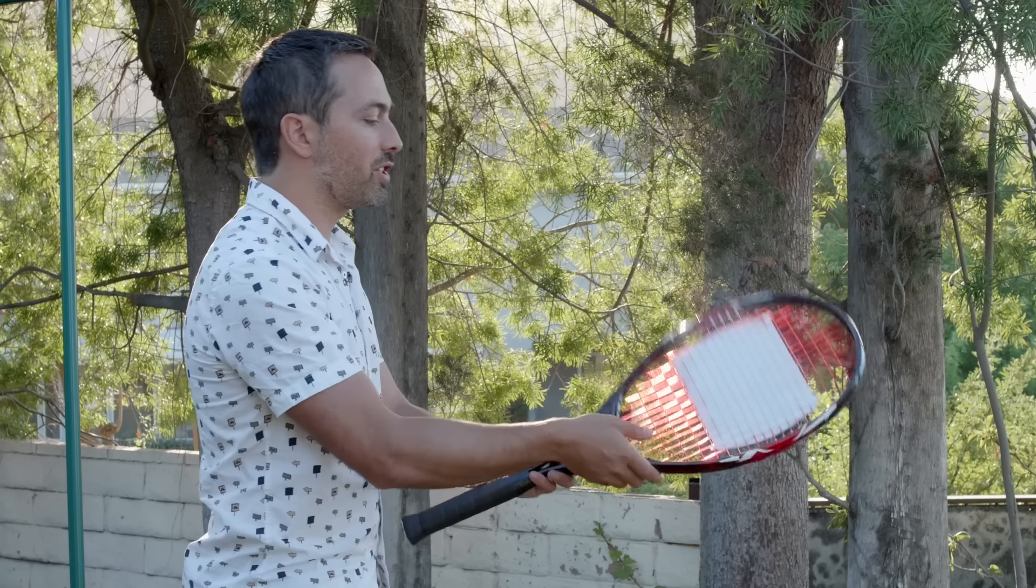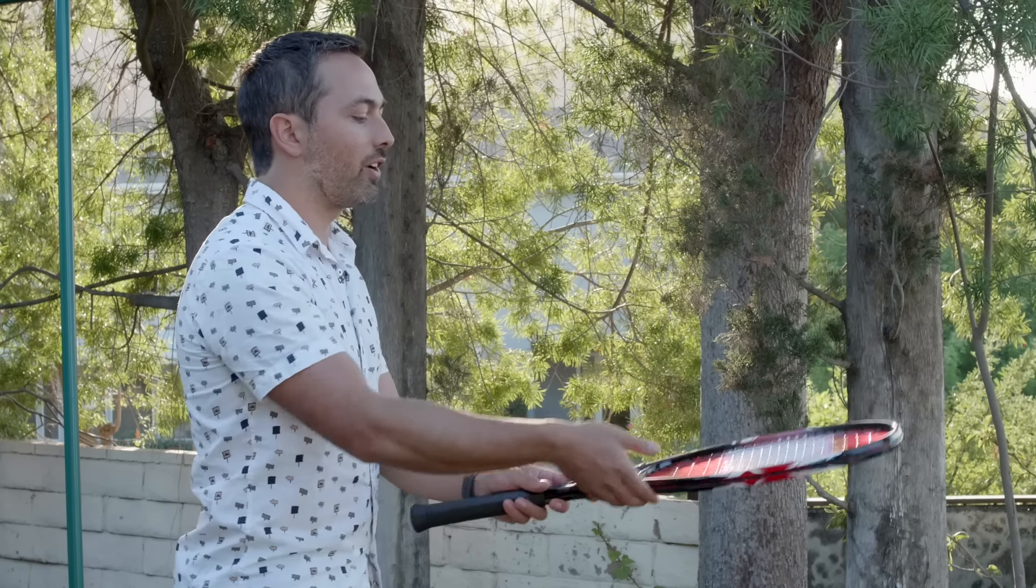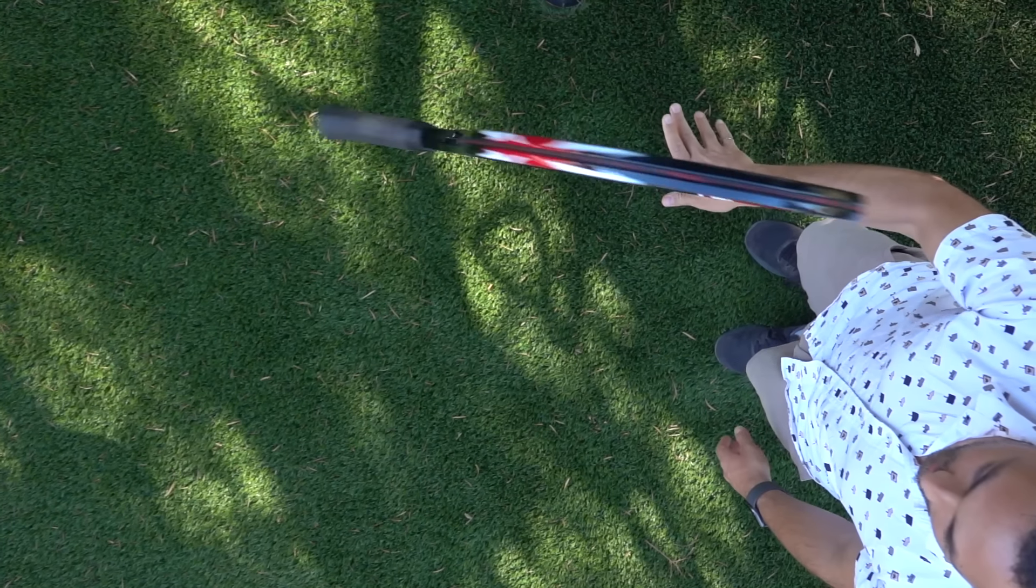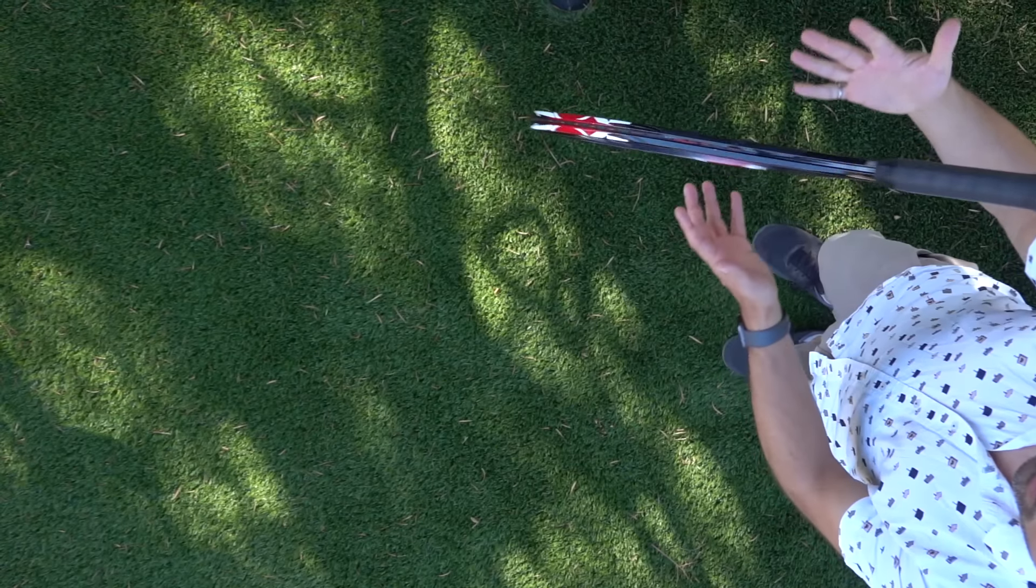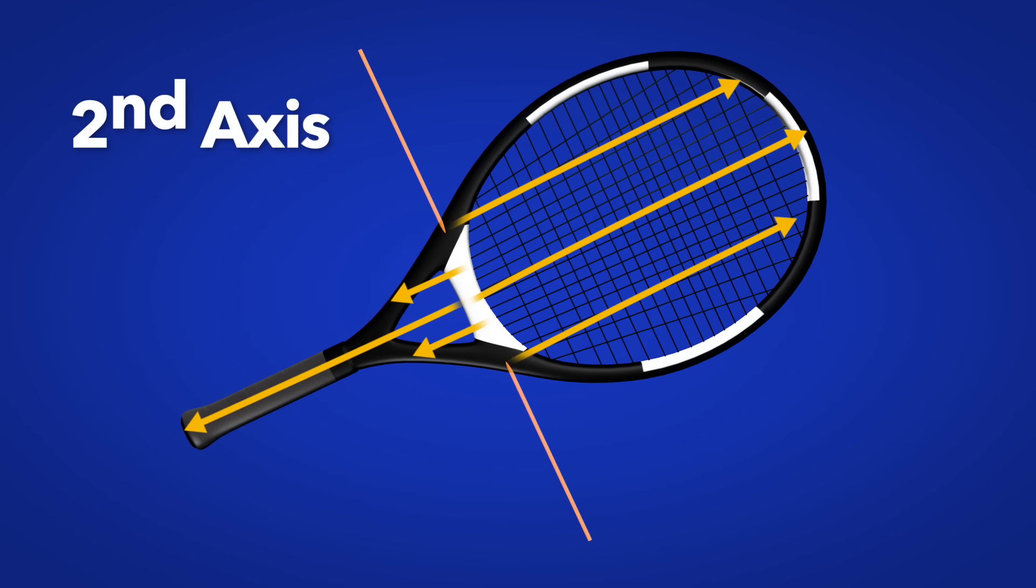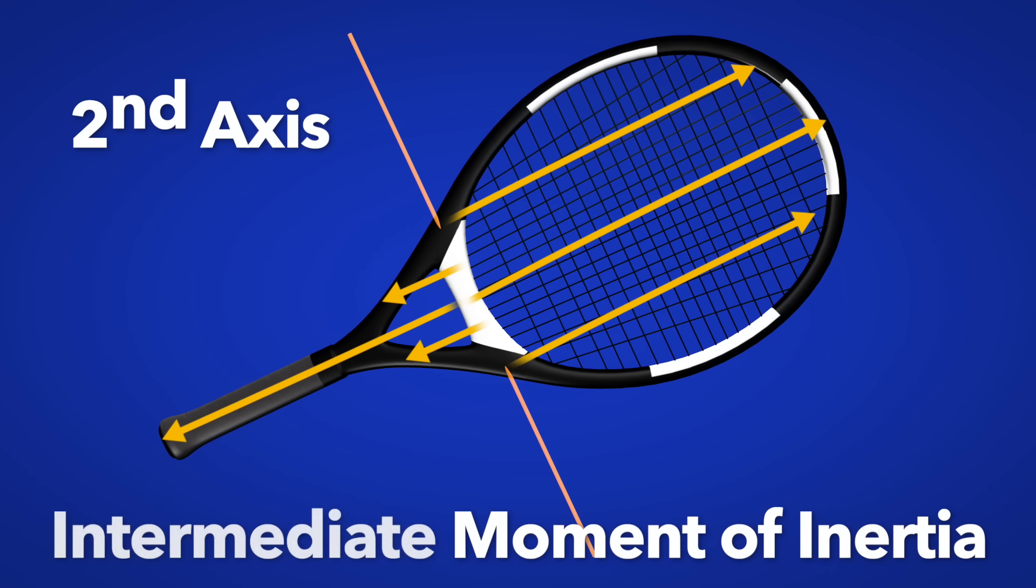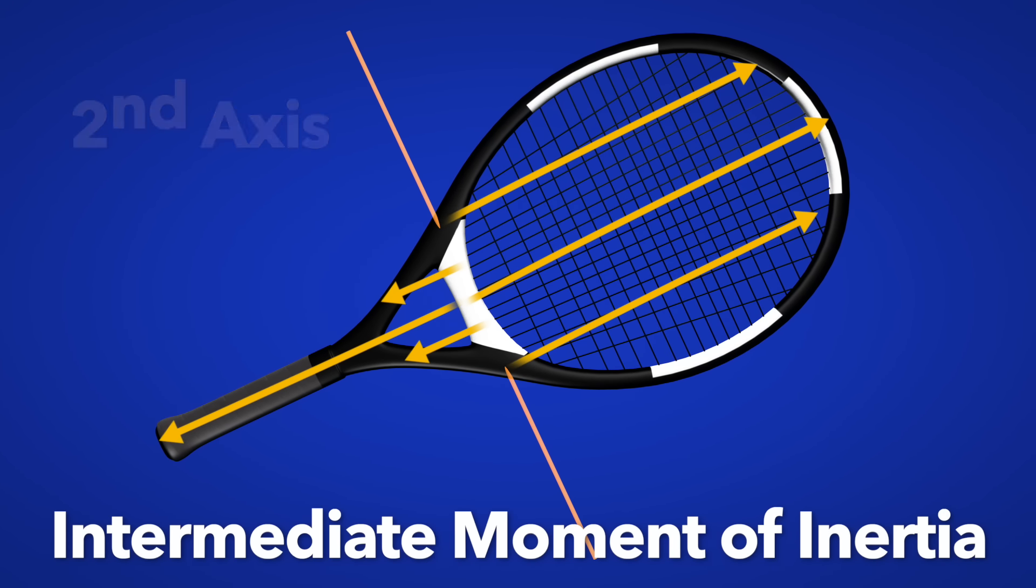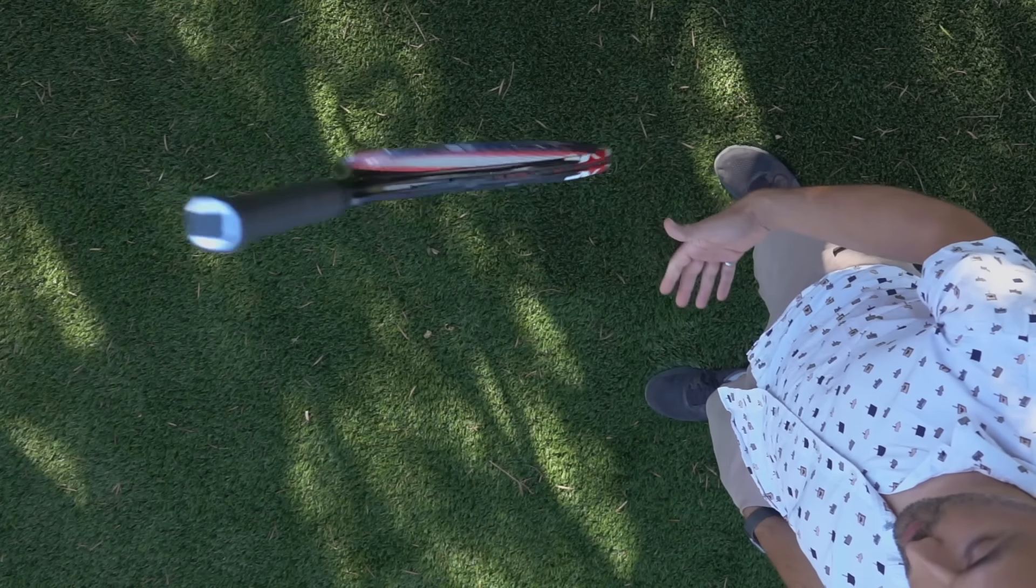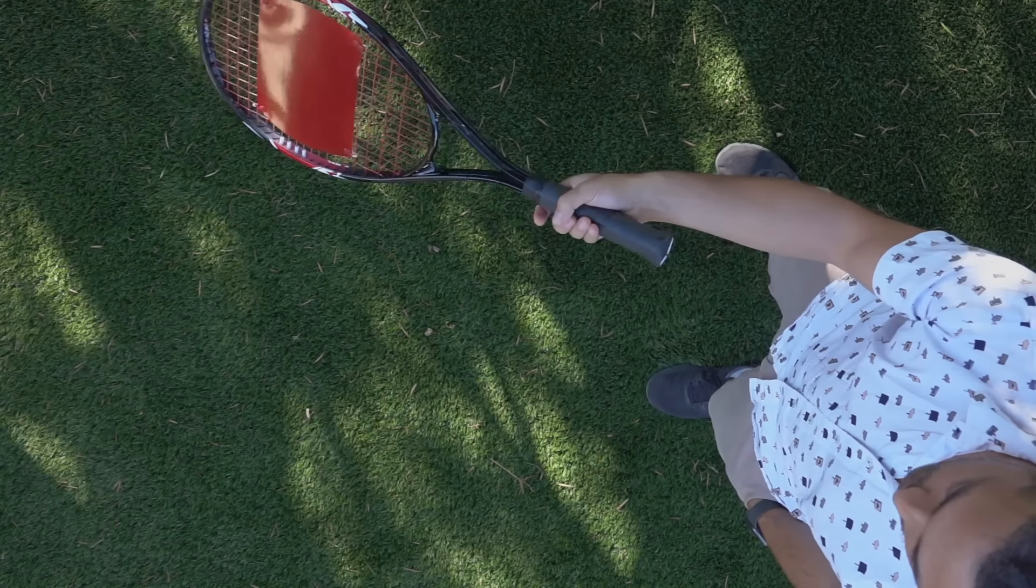Now what you'll notice with spins about these axes is that they're stable. There's no rotation happening about any of the other axes when you try to rotate around the first or third axes. But, rotating about the second axis, the intermediate axis, where the moment of inertia is in between the other two, well that is where you get this half twist. And there's virtually nothing you can do to stop it.